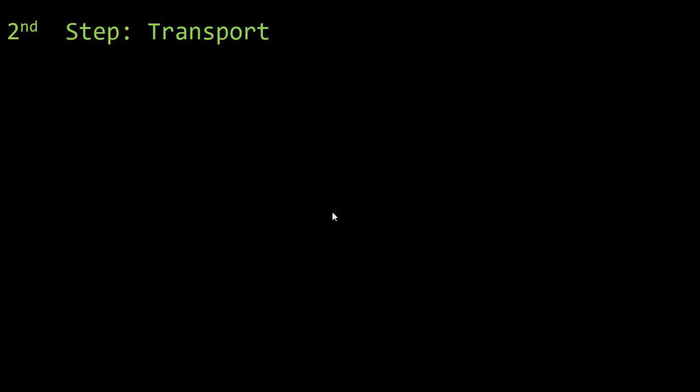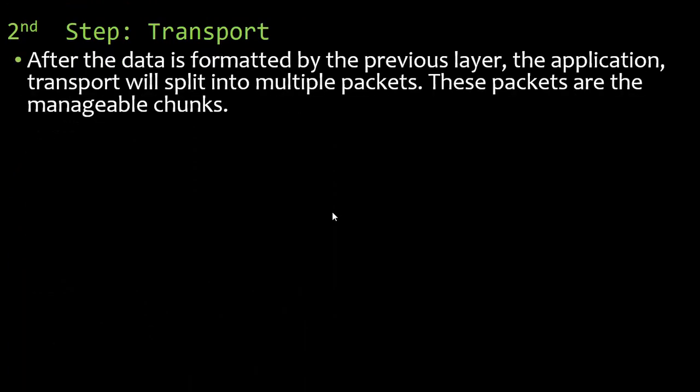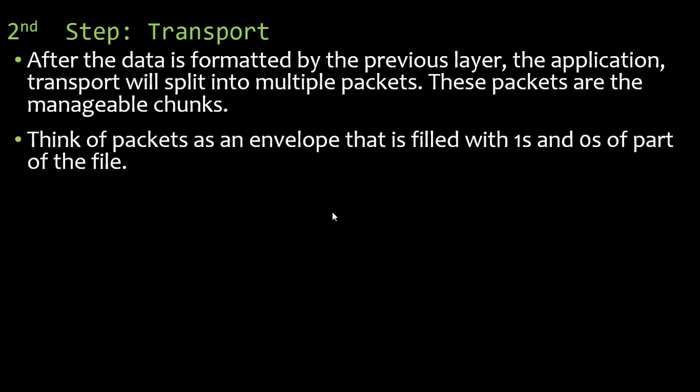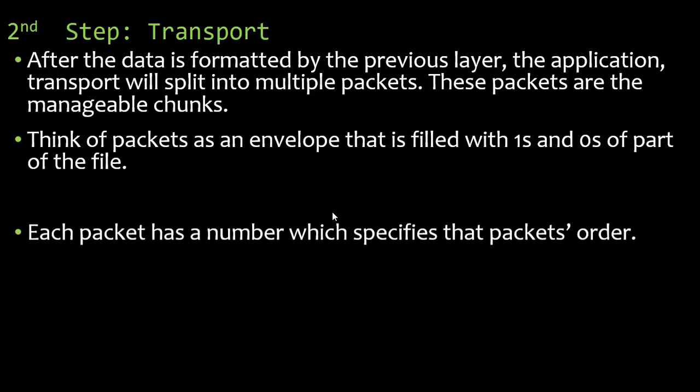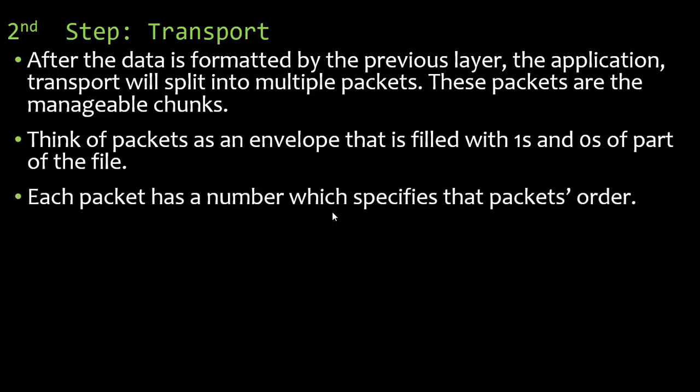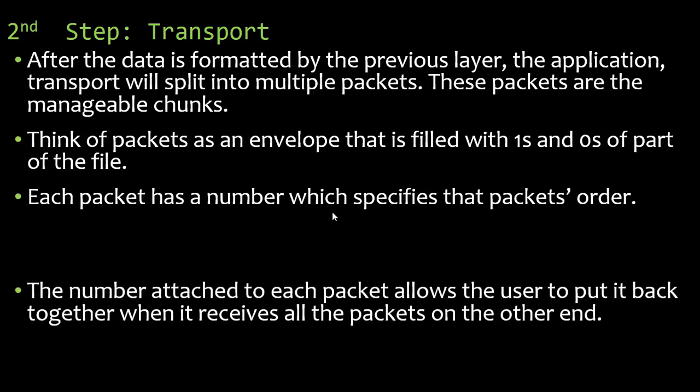After the application layer, we move to the transport layer. After the data is formatted by the application layer, the transport layer splits it into multiple packets — these are the manageable chunks. Think of packets as an envelope filled with ones and zeros, which is part of the file. Each packet has a number which specifies that packet's order.